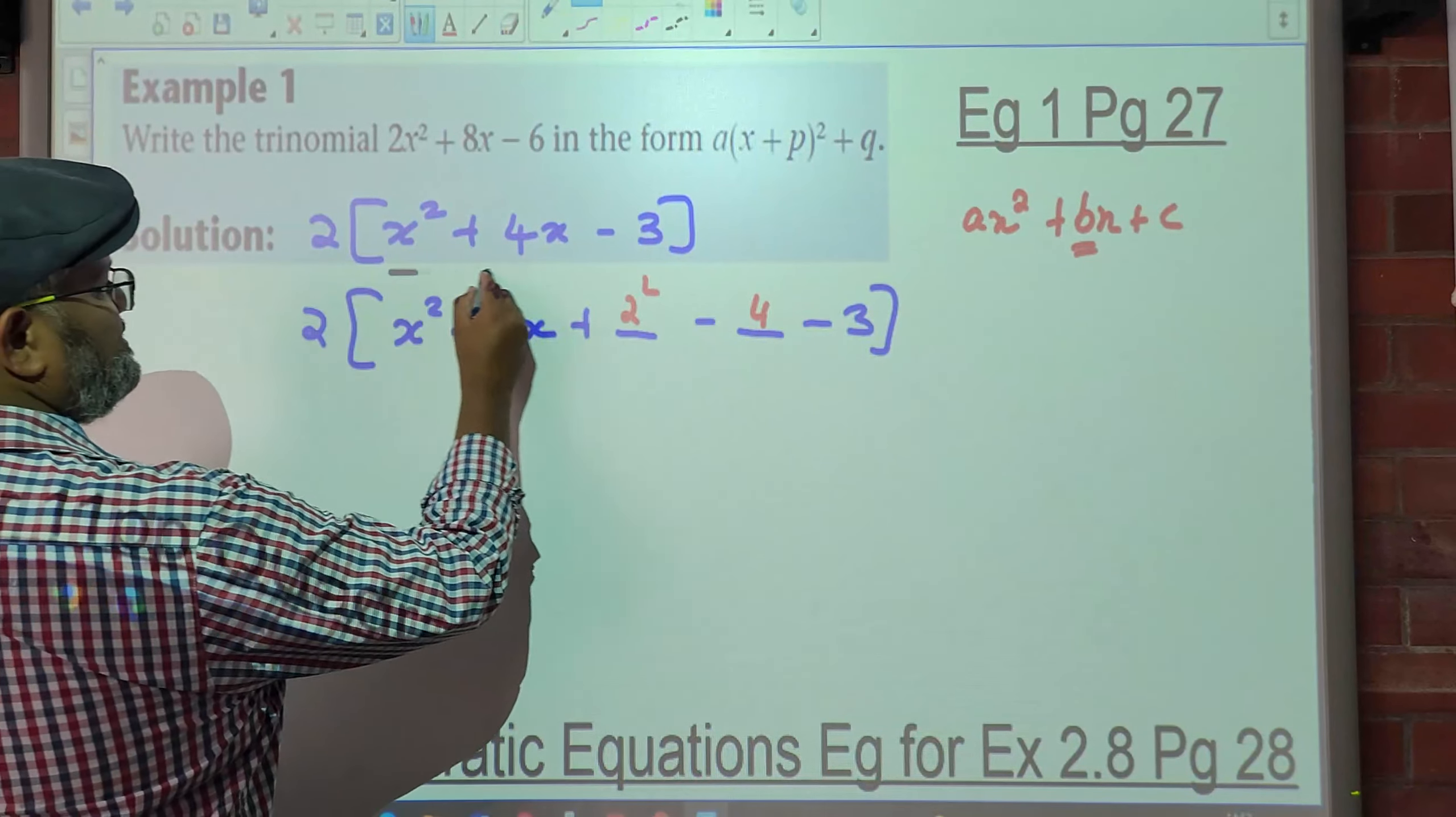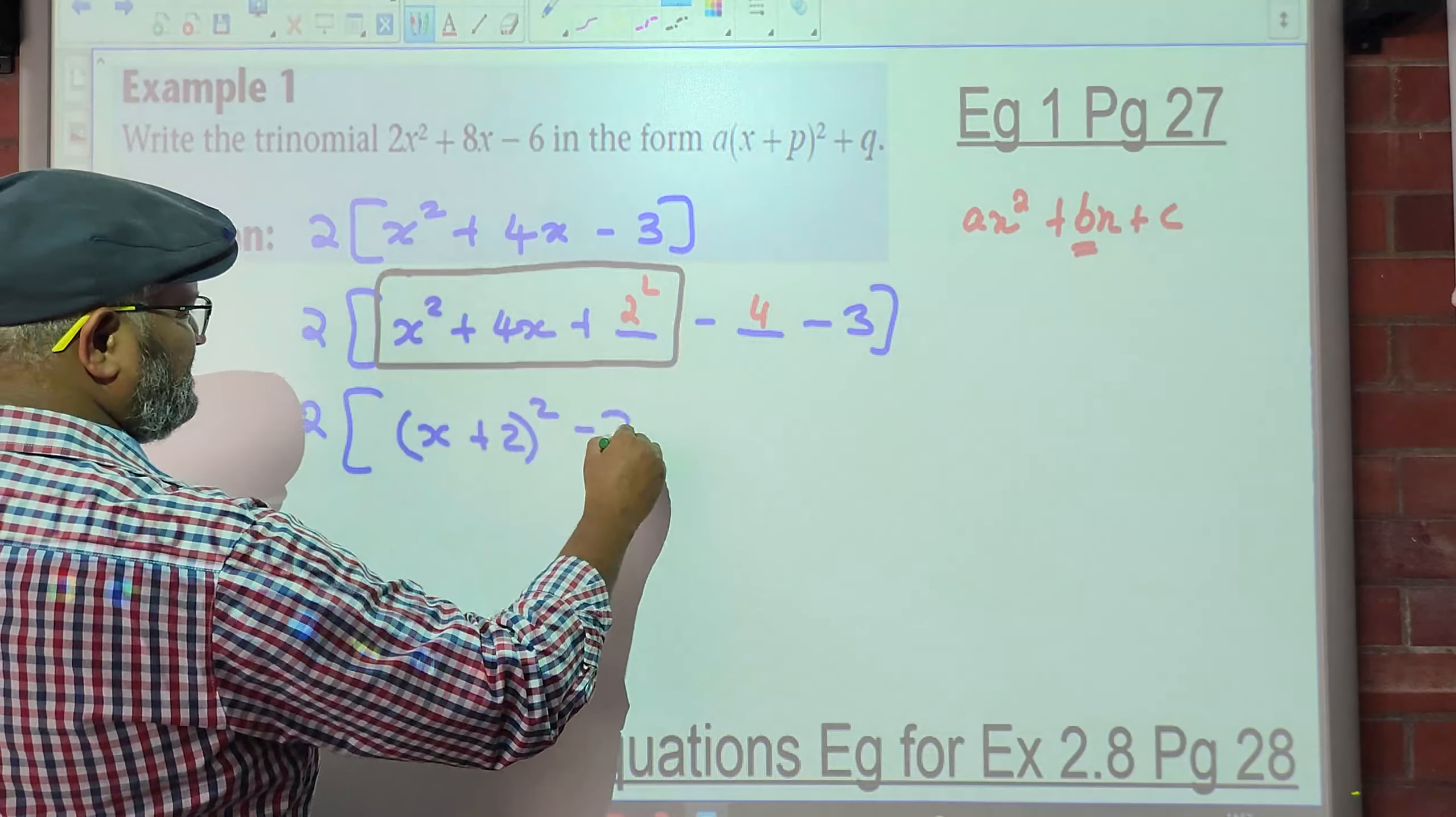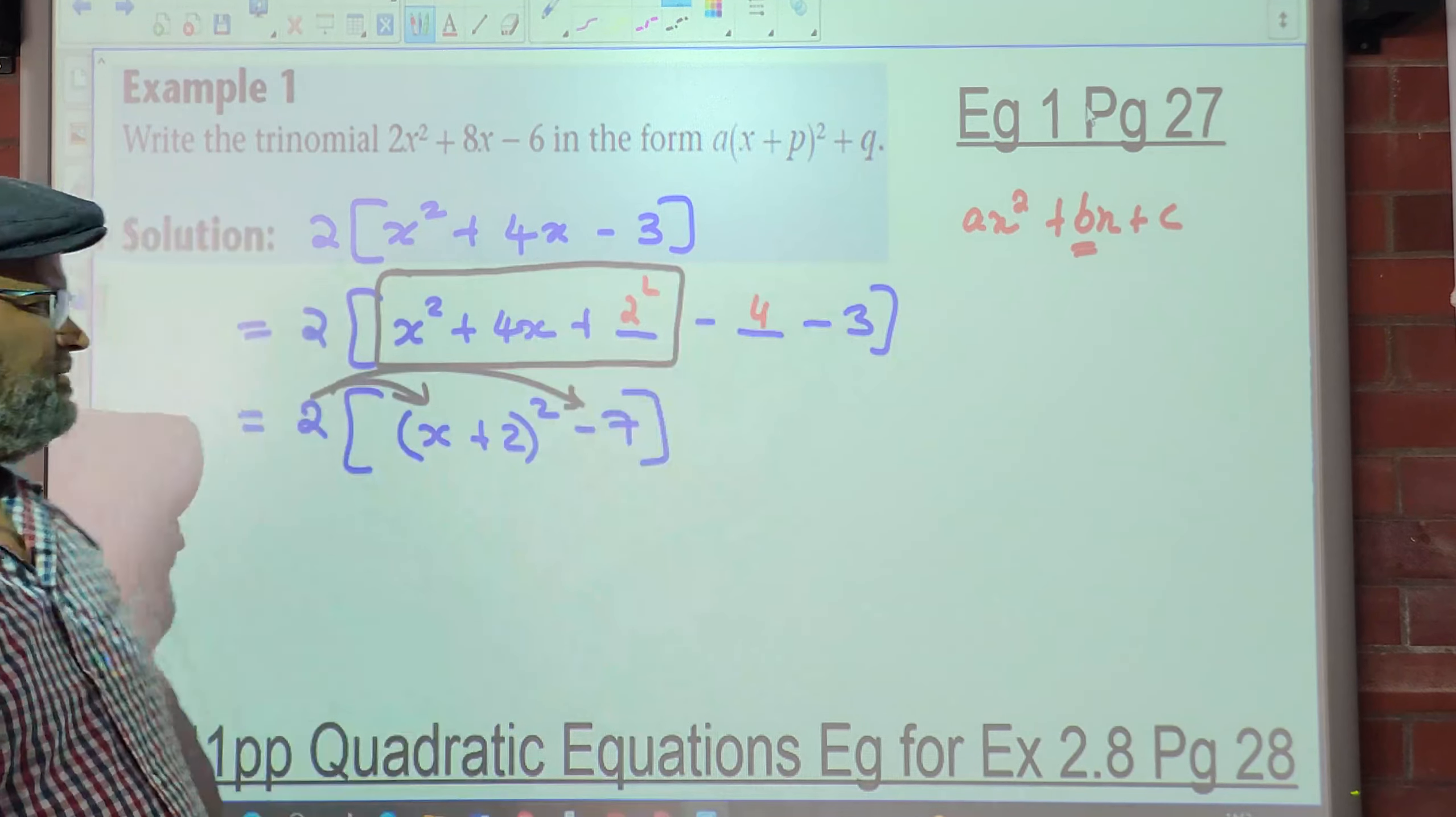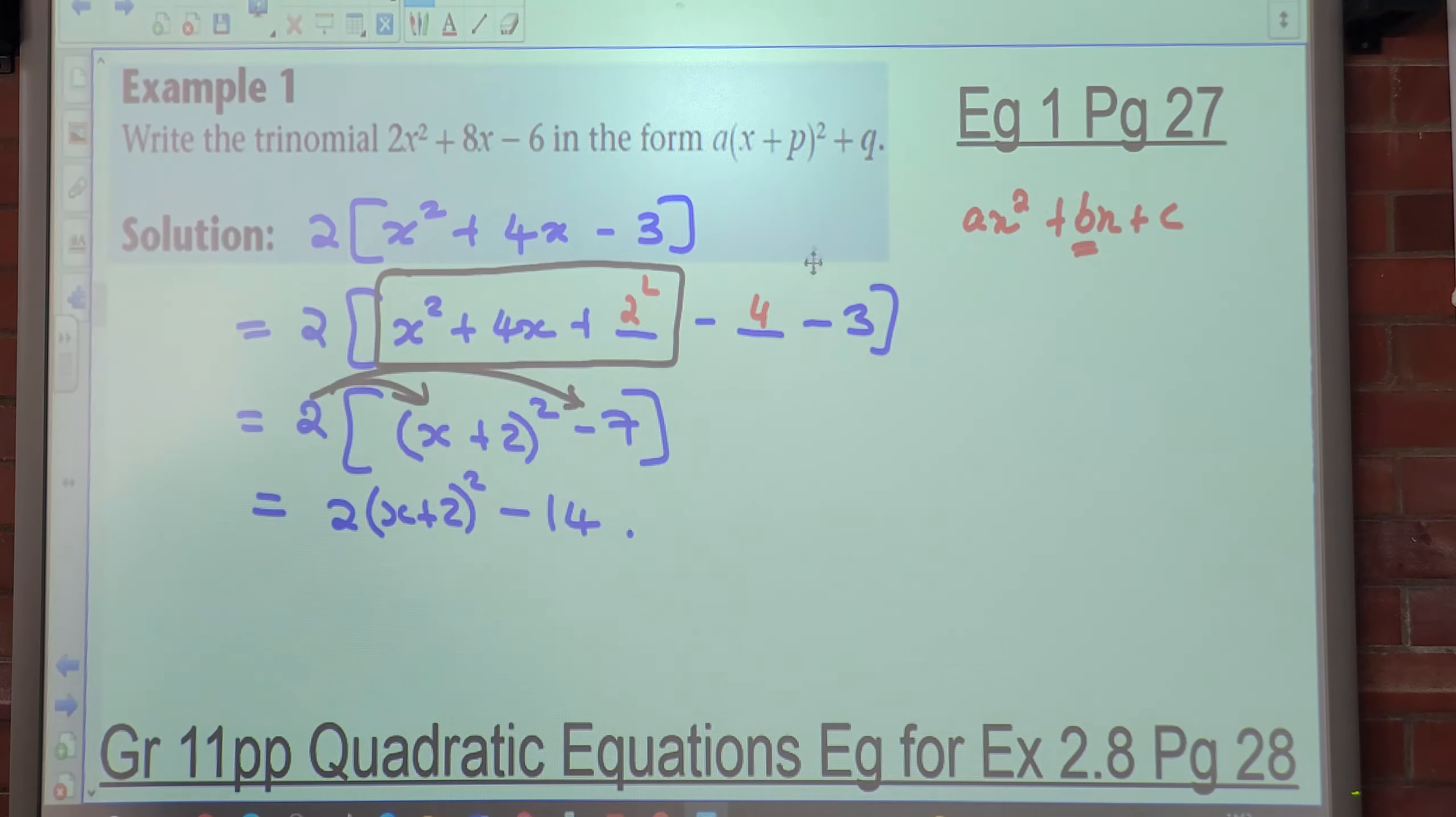So what is this, people? Perfect square trinomial. So it's 2 into this would give us (x + 2)². What's -4 - 3? -7. So what do we do now? Multiply this here. Because you see there's no outer bracket here. So multiply that in. It's going to be 2(x + 2)² - 14. Is there any confusion there? Can we move on?